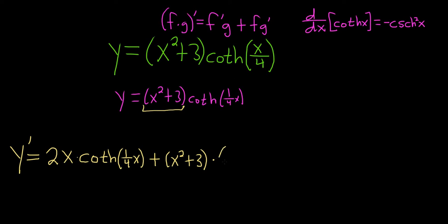Which is negative hyperbolic cosecant squared of one-fourth x times the derivative of the inside. So chain rule. So one-fourth because the derivative of x is 1.